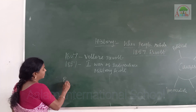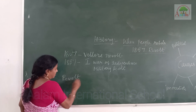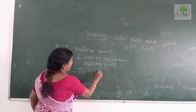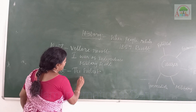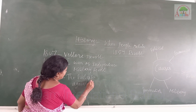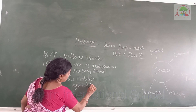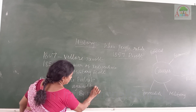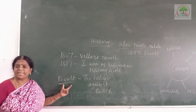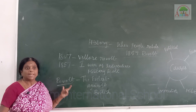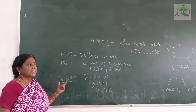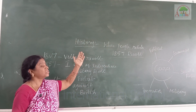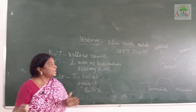Children, do you know what is the meaning of revolt? Revolt means protest against the British. So the main point is: who did the revolt? The rebels. Who are the rebels? The rebels are spread all over North India. This revolt only started in North India, not in South India.